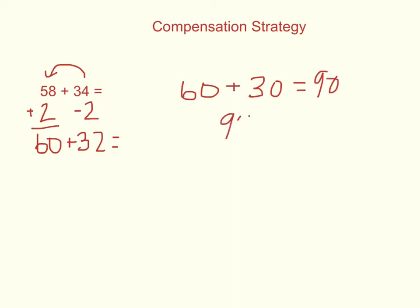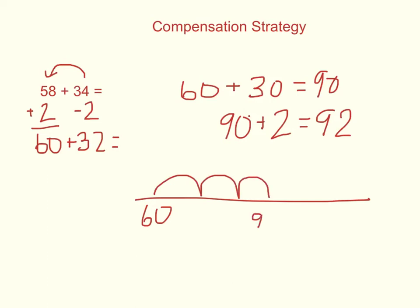Or using an open number line, I start at 60, jump up 30—10, 20, 30—to get to 90, and add 2 more to get to 92.